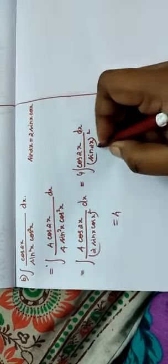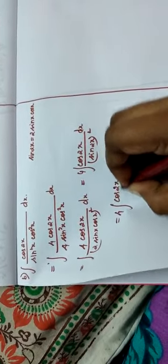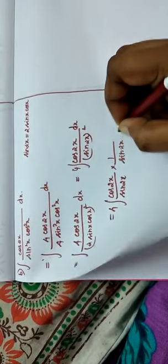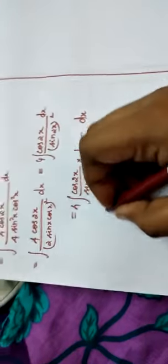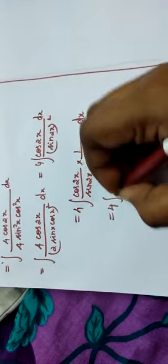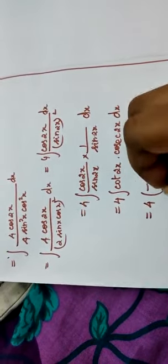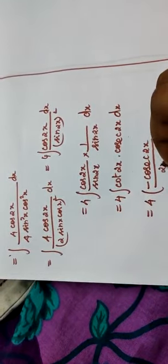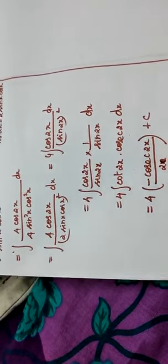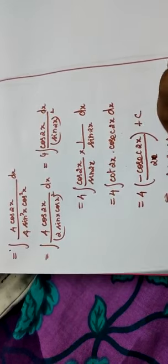Take 4 outside and split the term: cos 2x over sin 2x, into 1 over sin 2x. This gives 4 times integral of cot 2x times cosecant 2x dx. The integral of cot x cosecant x is minus cosecant x, so here we get 4 times minus cosecant 2x divided by 2, plus c. Cancelling gives our answer: minus 2 cosecant 2x plus c.